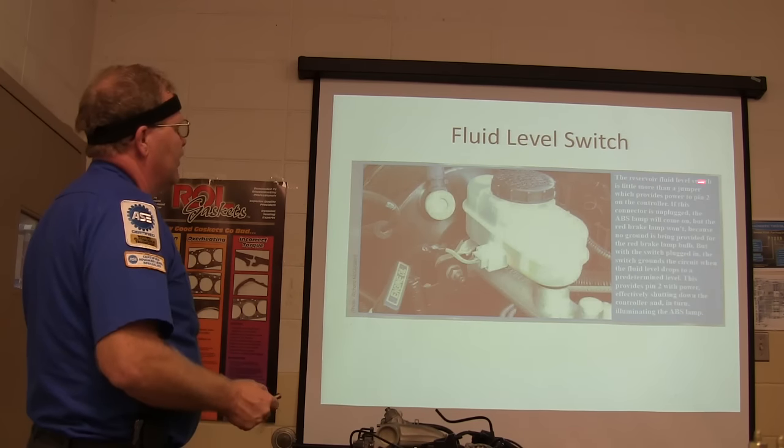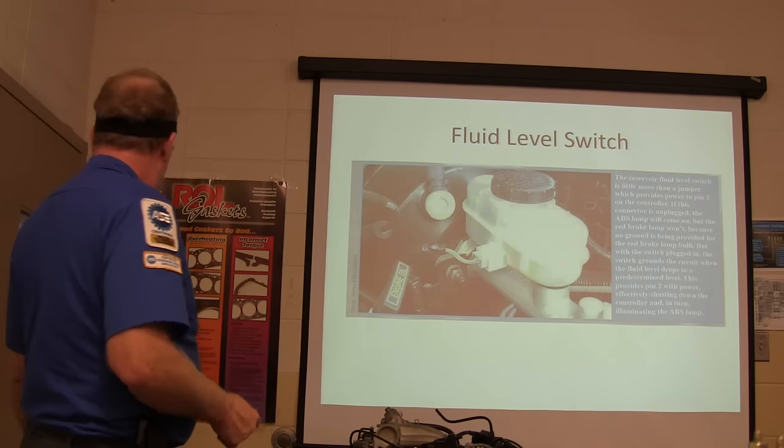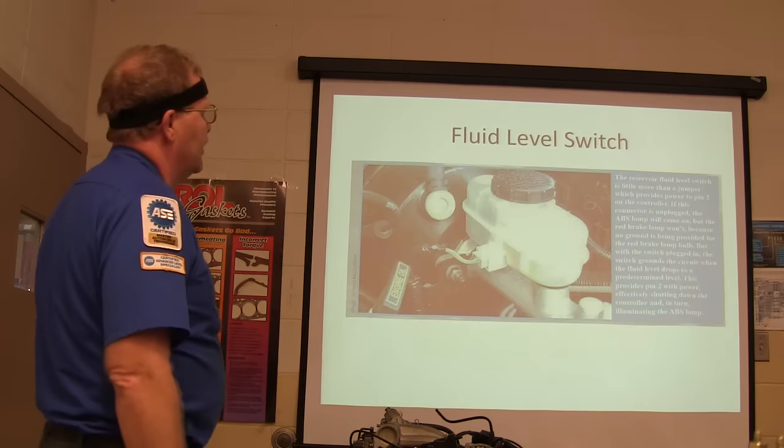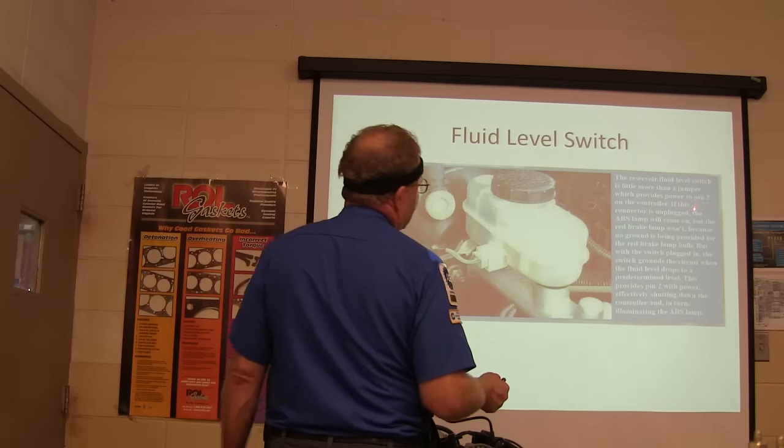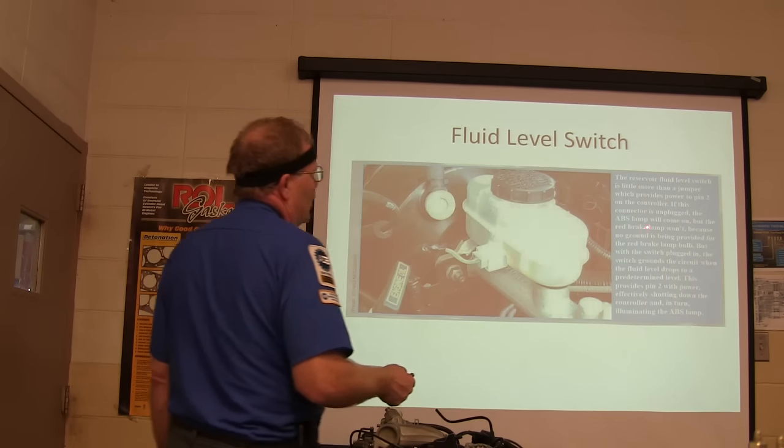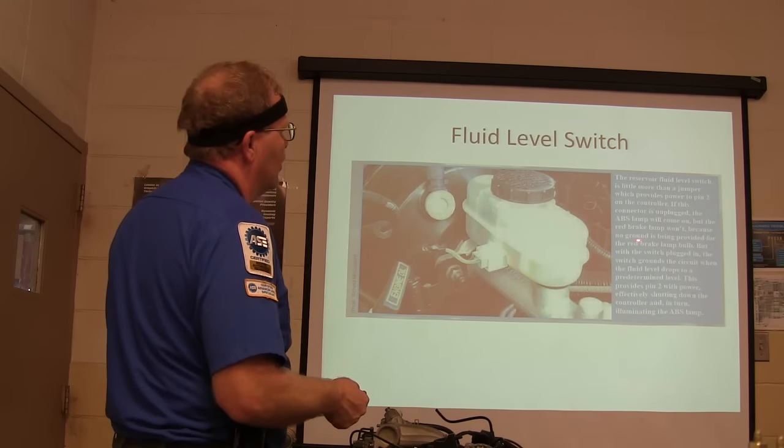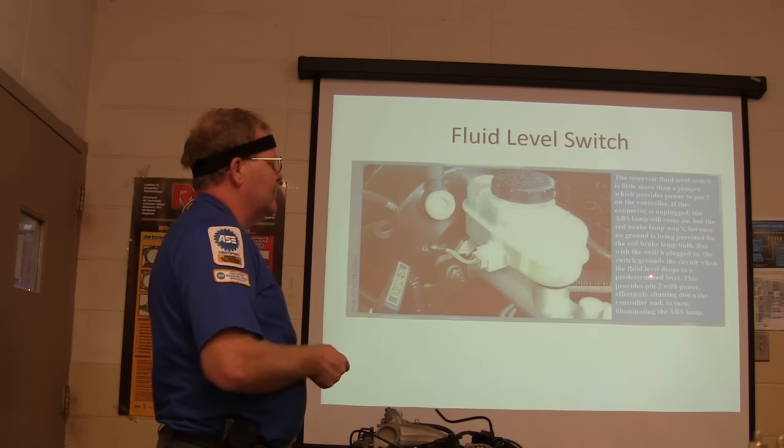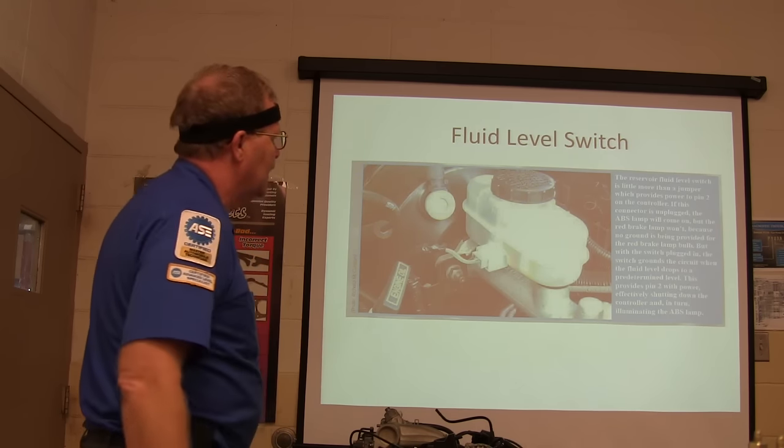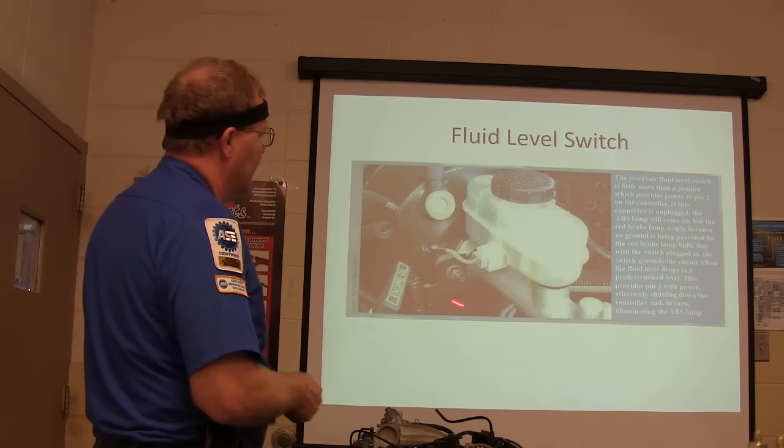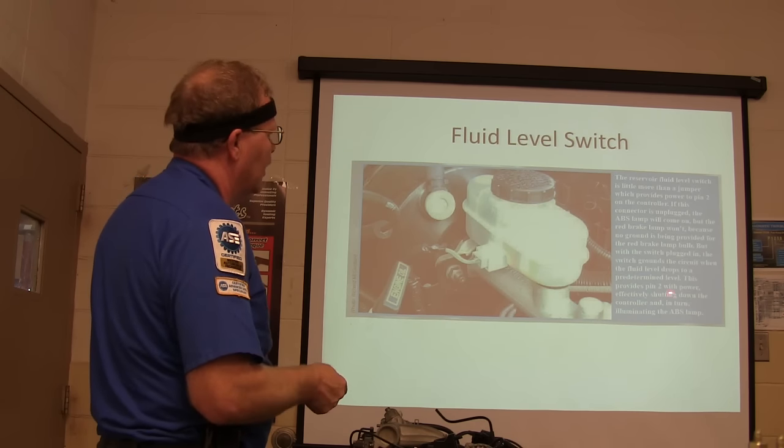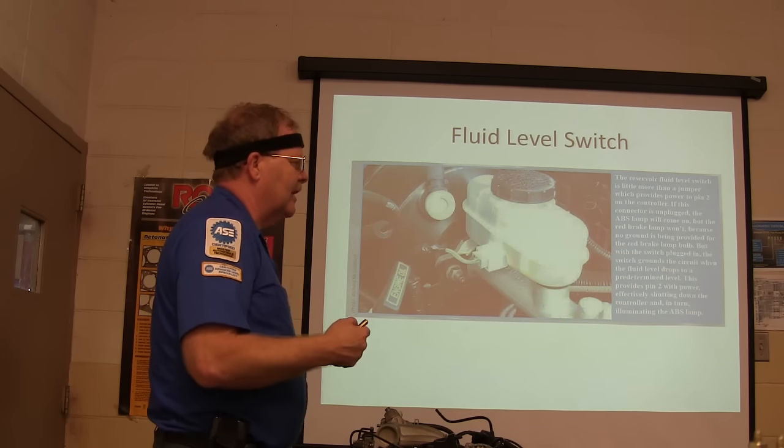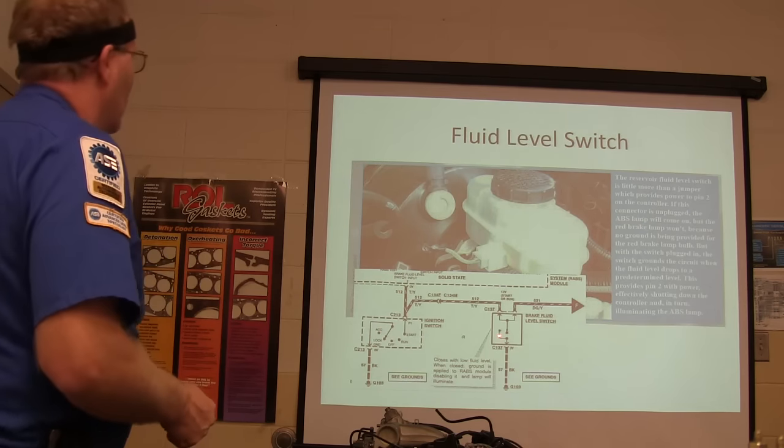But anyway, here we go. Reservoir fluid level switch is right here. You notice there's two colored wires and there's one black wire going to that little switch. It's really cool to understand how that thing's wired up. If that connector's unplugged, the ABS lamp will come on, but the red brake lamp won't because no ground's being provided for the red brake lamp bulb. But with the switch plugged in, the switch grounds the circuit when the fluid level drops to a predetermined level. And that provides pin 2 on the controller with power, and it shuts down the controller and illuminates the ABS lamp. If the ABS lamp's on, you don't have any anti-lock brakes.